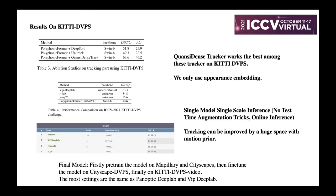We only use appearance embeddings during inference and perform tracking in an online manner, so there is large room for improvement with motion priors. Our work achieved the best performance on KITTI DVPS. For the final model we first train on Mapillary and Cityscapes, then fine-tune on Cityscapes DVPS, and finally on KITTI DVPS. Other settings are the same as Panoptic-DeepLab and ViP-DeepLab. Our work uses single model, single scale inference — no test-time augmentation tricks — and the tracker is online, not offline.